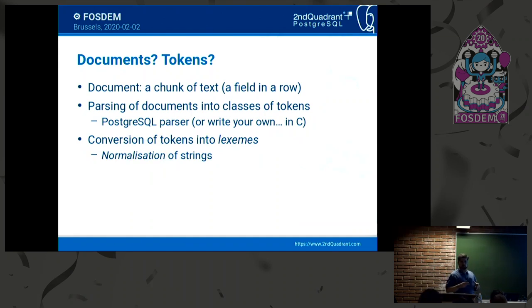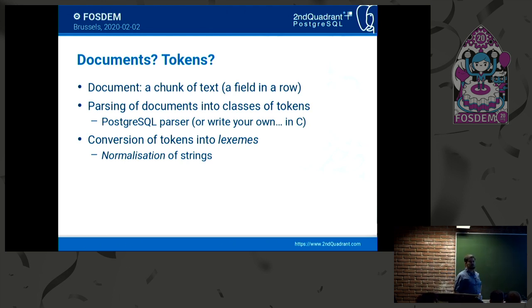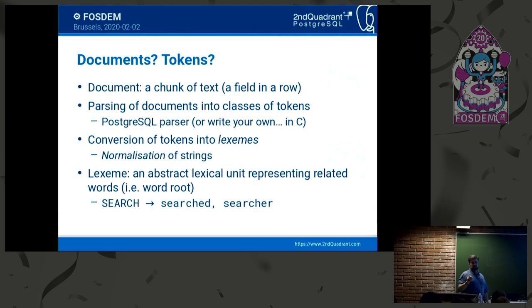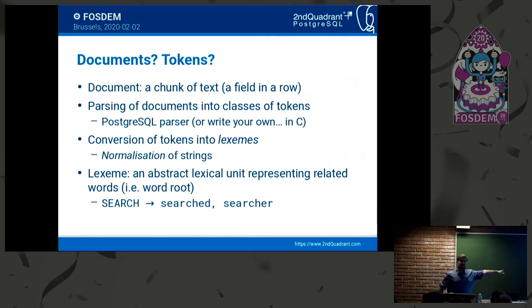In order to do anything useful with our data set, we need to convert the tokens from these documents into lexemes. We have to perform what is called the normalization of our strings — turn them into some more usable form from their original form. What is a lexeme? It's an abstract lexical unit representing the set of related words. You can call it the word root, but a word root only applies for human language. In the context of natural language, the lexeme is the word root. Therefore, the lexeme 'search' can stand for the words 'searched' and 'searcher,' because you can reduce these words down to that lexeme.